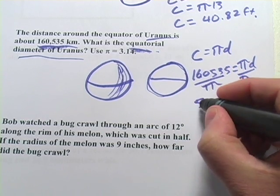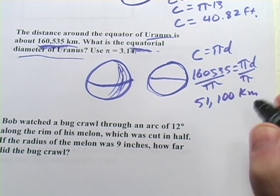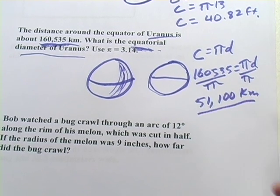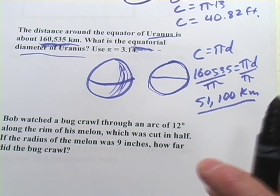You should get something like 51,100 or so kilometers. I'm rounding a little bit, but you can check that on your own calculator. And that's the equatorial diameter of Uranus, if you've ever wanted to know.